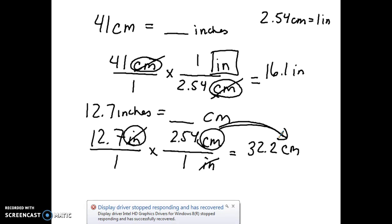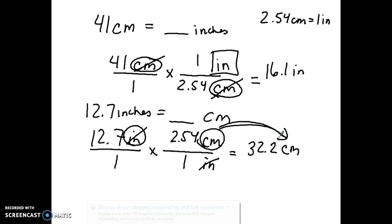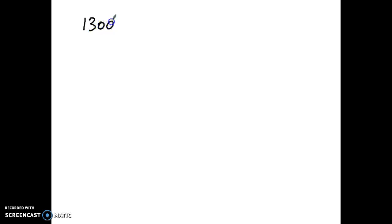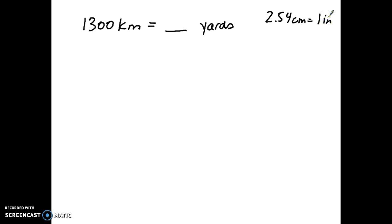Those were simple one-step conversion factors — one where you multiply and one where you divide. But what if a direct conversion factor isn't available? Let's do a more complex example: converting kilometers to yards. The only conversion I'd give you is still 2.54 centimeters equals one inch. A direct kilometer-to-yards factor is on the internet, but you won't have access to that on a test — so understanding the process is what matters.